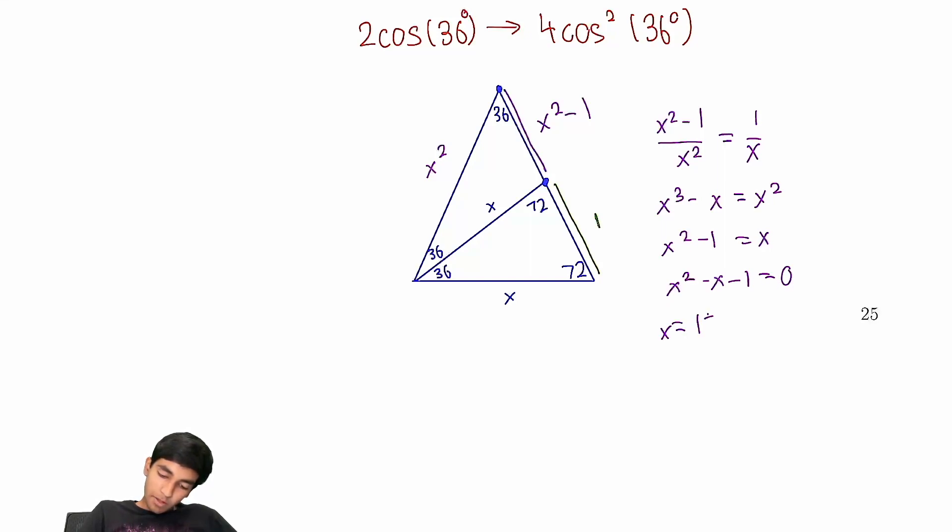x equals 1 plus, or just plus because x has to be positive. The square root of b squared. So you get 1 squared minus 4 times negative 1 all over 2. So x is √5 plus 1 by 2. And this is the golden ratio.